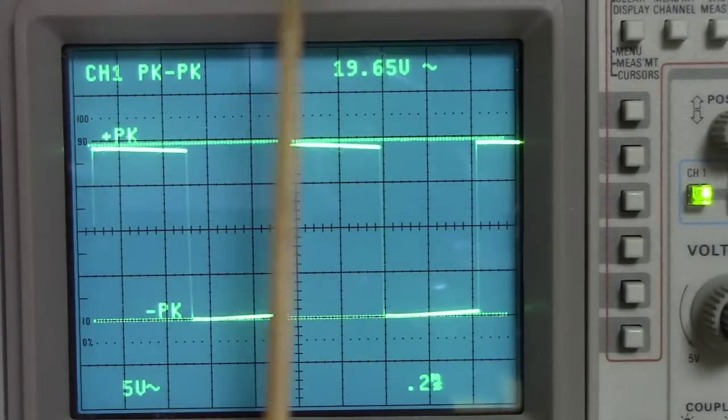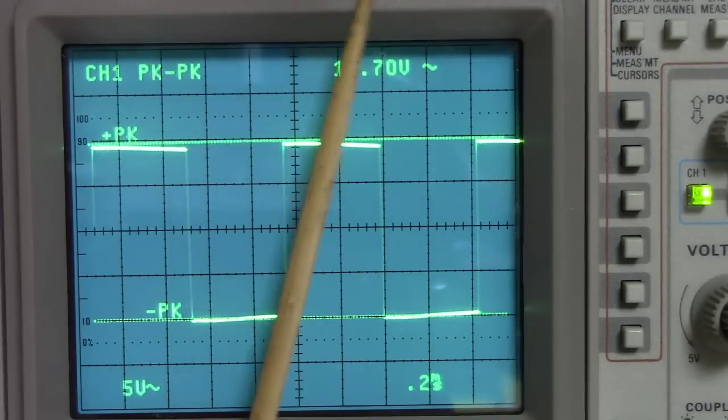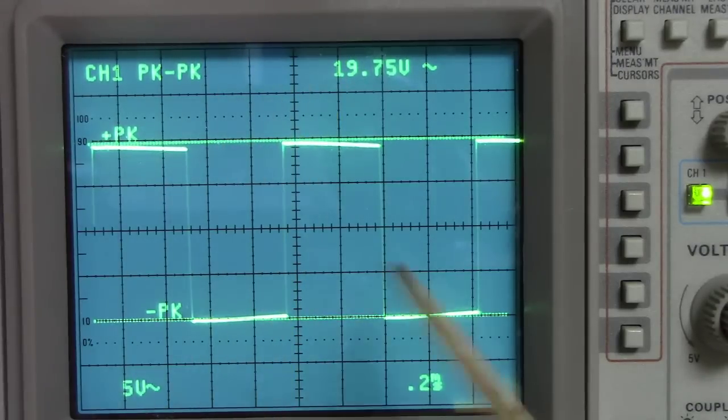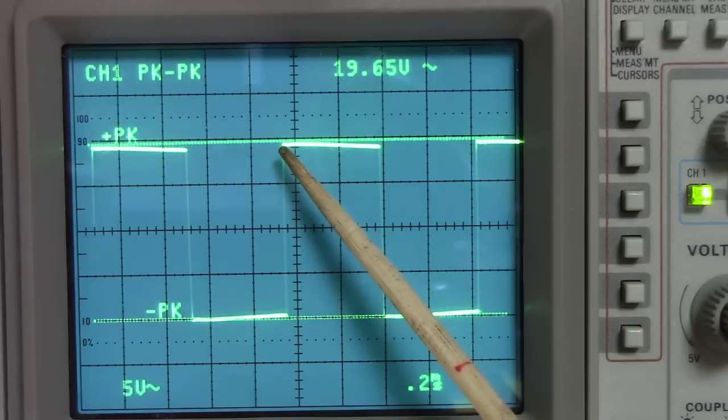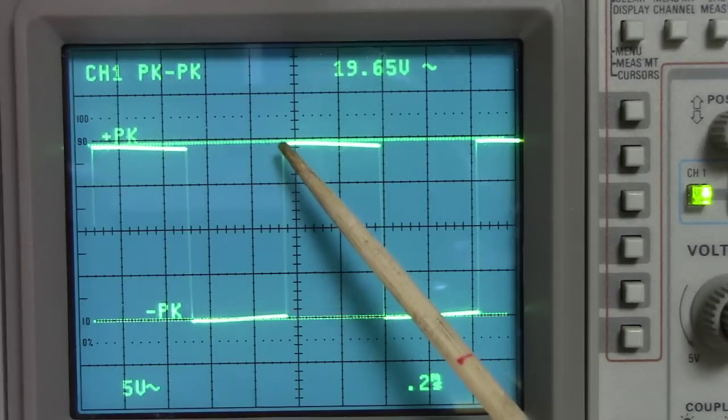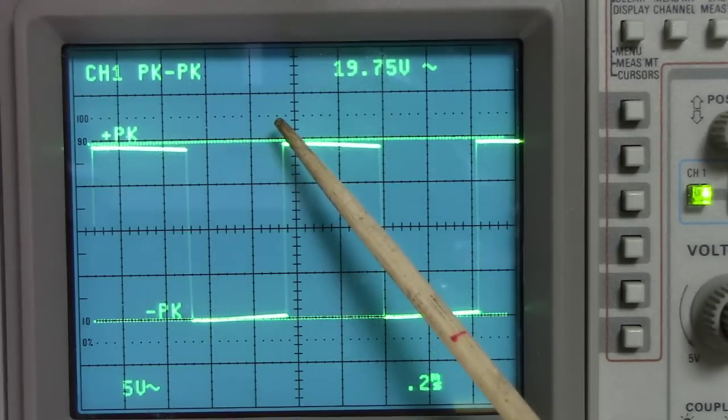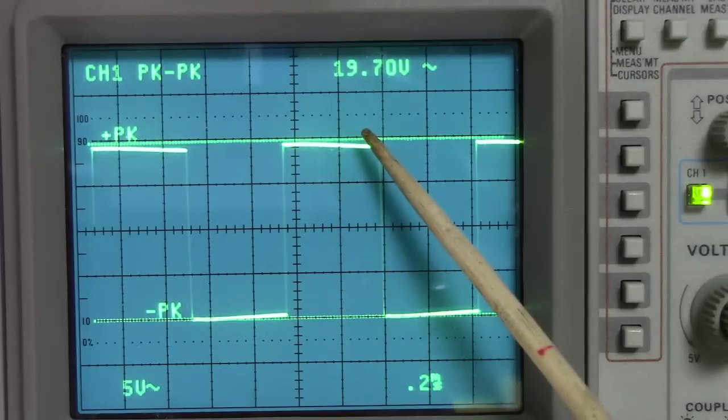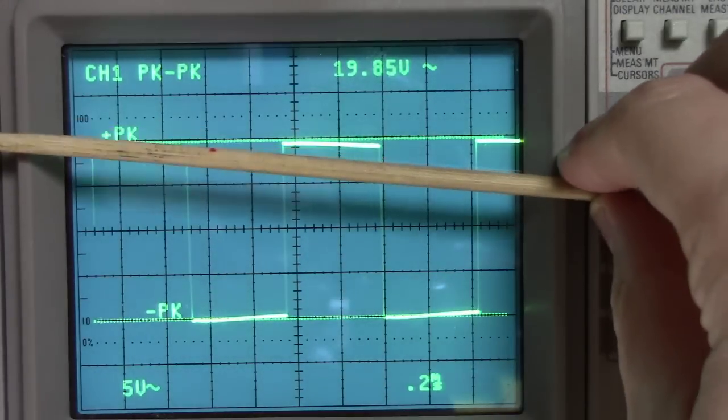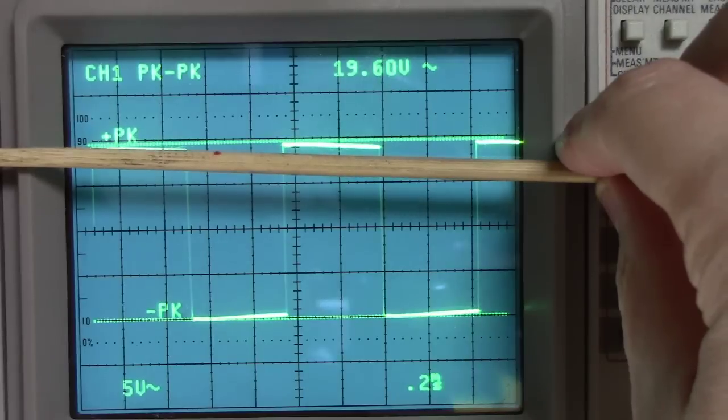Second thing you want to look for here on the tip is that there's no ringing, so you don't see a lot of overshoot and then correction and then back. The third thing you want to look for is how flat is this top portion, because the flatter it is, the better this amplifier is performing across the entire frequency spectrum.